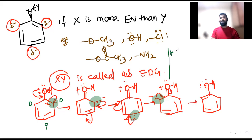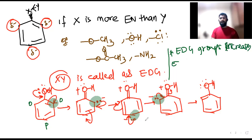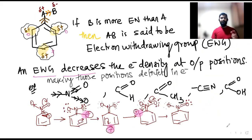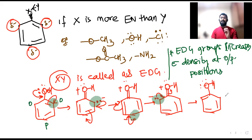So electron donating groups increase the electron density at ortho and para positions — contrary to what electron withdrawing groups do. EWGs pull electrons and ortho/para positions get positively charged, while EDGs push electrons and ortho/para positions become negatively charged, meaning they become electron rich at those sites.